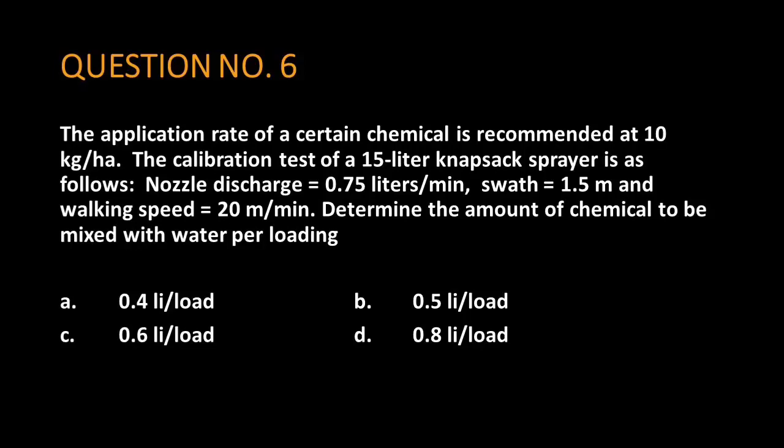Question number 6. The application rate of a certain chemical is recommended at 10 kilograms per hectare. The calibration test of a 15-liter knapsack sprayer is as follows: Nozzle discharge is 0.75 liters per minute, swath is 1.5 meters, and walking speed is 20 meters per minute. Determine the amount of chemical to be mixed with water per loading.